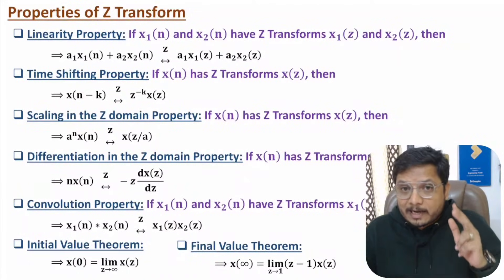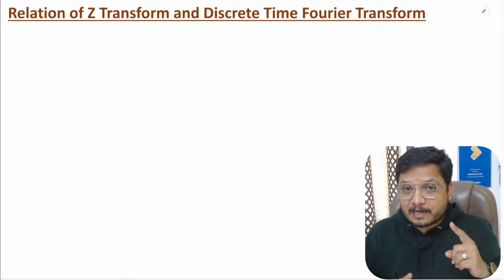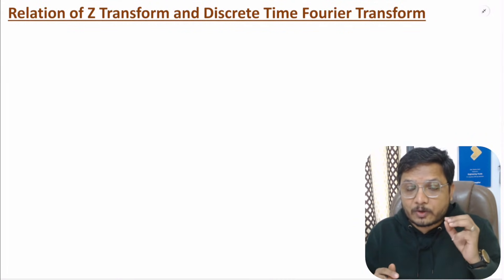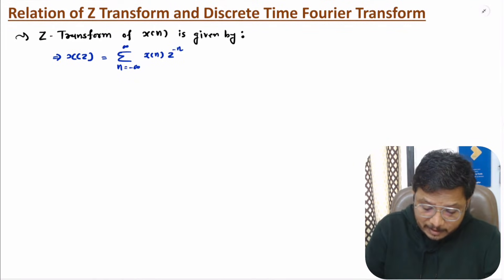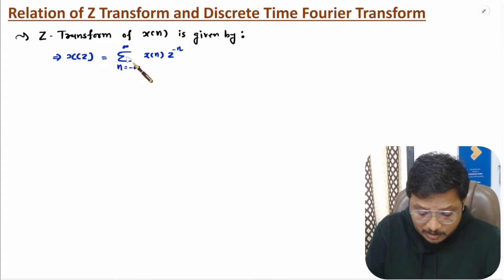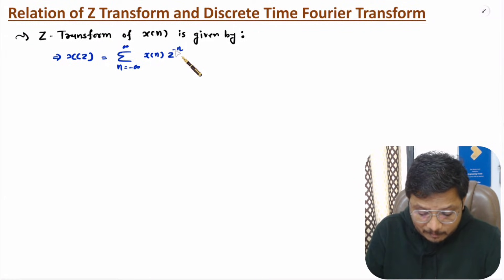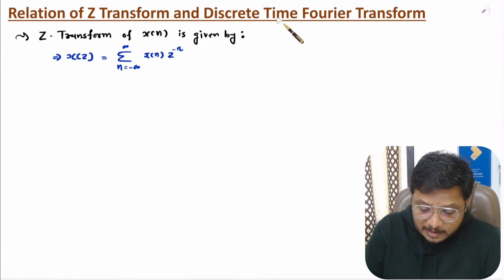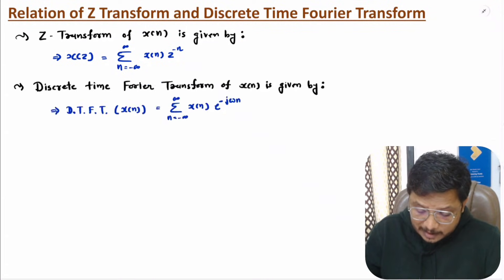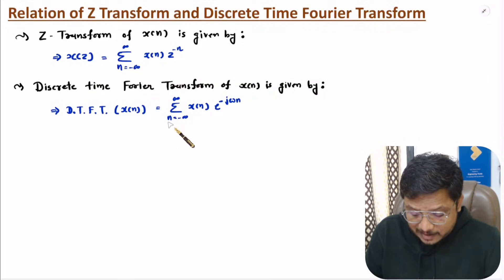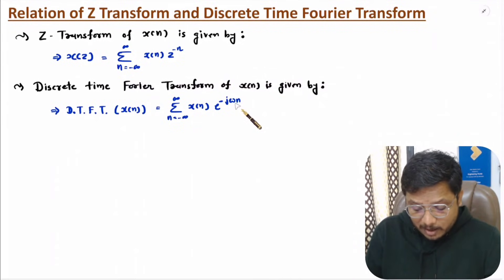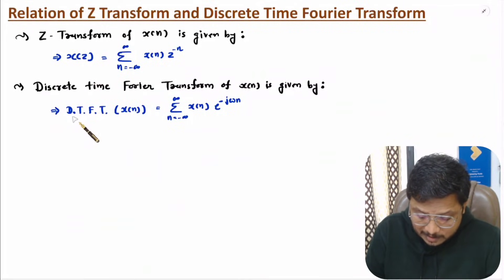Now I will derive the relation of Z-transform with discrete time Fourier transform. The Z-transform of x(n) is X(z) = summation from n = minus infinite to plus infinite of x(n) * z^(minus n). The discrete time Fourier transform of x(n) is the summation from n = minus infinite to plus infinite of x(n) * e^(minus j*omega*n).